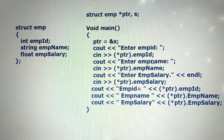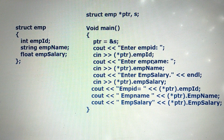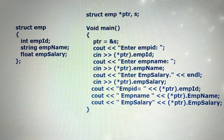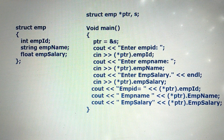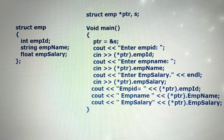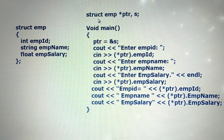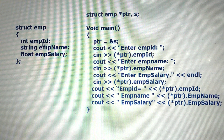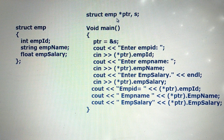The next step is to declare the object of the structure and pointer of the structure. To declare the object and pointer of the structure, give the user-defined data type of structure employee. The user-defined data type starts with the keyword struct, then give the name of the structure — here the name is EMP.